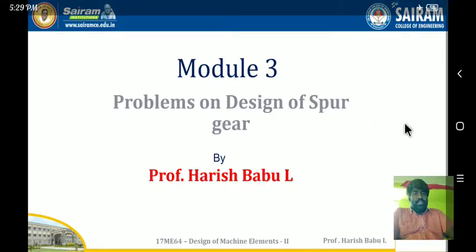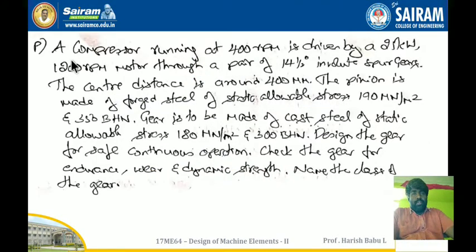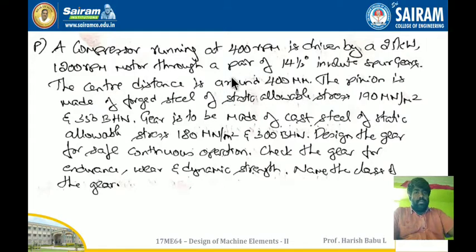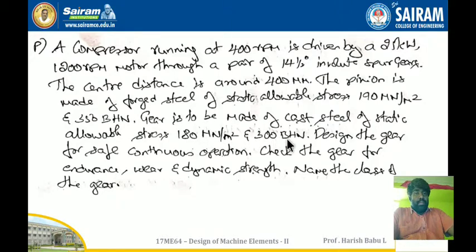Hi friends, we will continue the problems on gear design. We are going to consider a problem: a compressor running at 400 rpm is driven by a 25 kW, 1200 rpm motor through a pair of 14.5° involute gears. The center distance is around 400 mm. Design the gear for safe continuous operation. Check the gear for endurance, dynamic strength, and name the class of the gear.